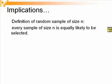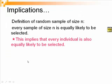What is the implication of the definition? Every sample of size N is equally likely to be selected, will imply that every individual in the population is also equally likely to be selected. A lot of people think that the second sentence in red is the definition of a random sample. But actually it is an implication. It is the result of the definition.